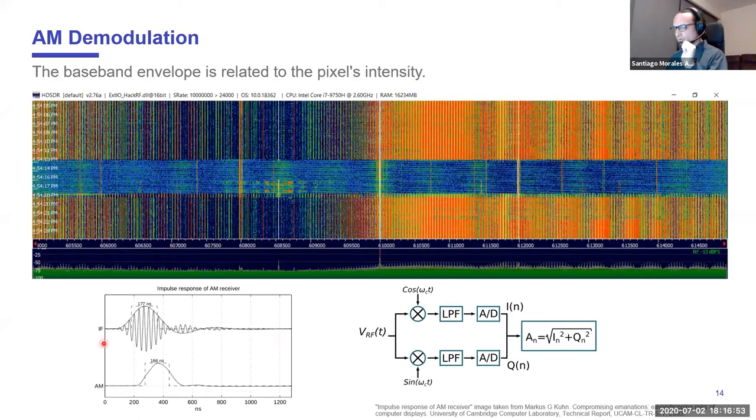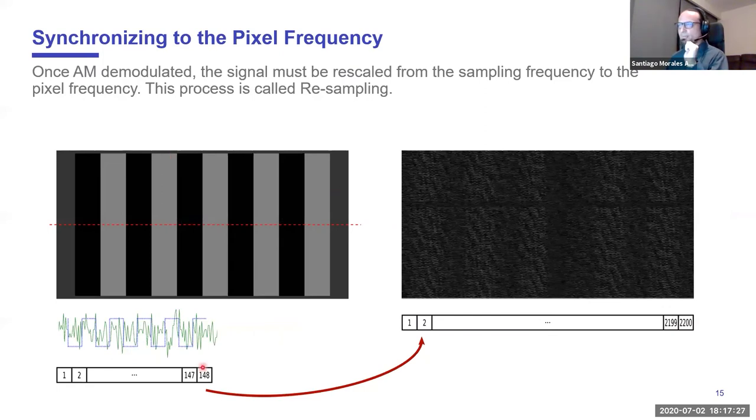So how do we recover this? As I told you, the amplitude, the envelope of the baseband signal is related to the intensity of the pixels. So at the end, what we are doing is an AM demodulation. This is something that is trivial on an SDR because to obtain the amplitude of a baseband signal, we only have to obtain the amplitude of the in-phase and quadrature information of the SDR.